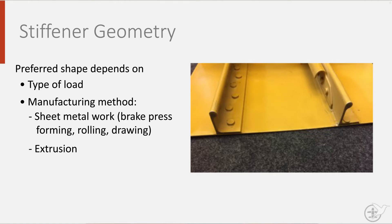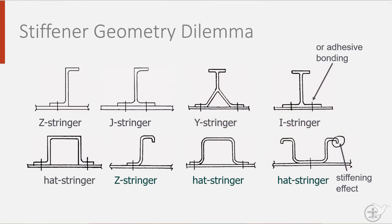Now it's your turn. Please select the stiffener geometry for the upper and lower side of an aircraft wing from the options given. Which of these stiffeners would you choose and why? You have as options a Z, a J, a Y, an I, a hat, a more curvy Z, a more curvy hat, and an inverted hat stringer. Pause the video here and think.